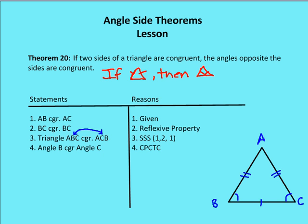Since I have two congruent triangles within the same triangle, I can say that angle B is congruent to angle C — by corresponding parts of congruent triangles are congruent. And that is the proof for the theorem: if sides are congruent, then the angles opposite the sides are congruent.